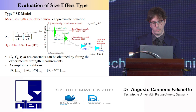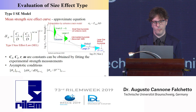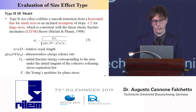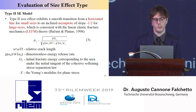For type two size effect I work with the simplified type two size effect expression, which gives the evolution of the strength over size — from a horizontal asymptote for small sizes down to an asymptote following the linear elastic fracture mechanics for larger sizes. You can write this expression in different ways.